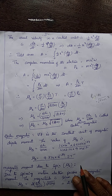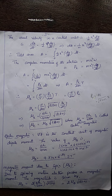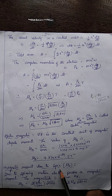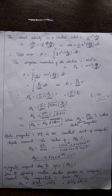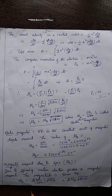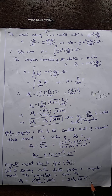The electron also possesses a spinning motion. In the orbit, electrons spin about their own axis, so they possess a spin magnetic moment, denoted μS. The spin magnetic dipole moment is given by μS = 2(eH/4πm)√(S(S+1)) = 2μB√(S(S+1)). This is the magnetic dipole moment due to spin.